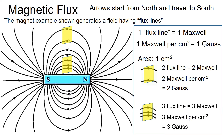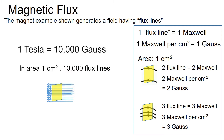Conversely, with three flux lines within the same area, the magnetic flux density increases to three Gauss. And this is an important concept. One Tesla equates to ten thousand Gauss, indicating the presence of ten thousand flux lines — Maxwell — within a one centimeter square area.